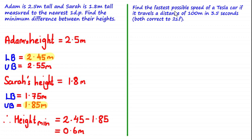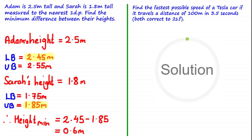Find the fastest possible speed of a Tesla car if it travels a distance of 100 meters in 3.5 seconds. Both of these quantities — distance and time — have been measured correct to two significant figures. Pause the video and have a go yourself, and when you come back I'll show you the solution.